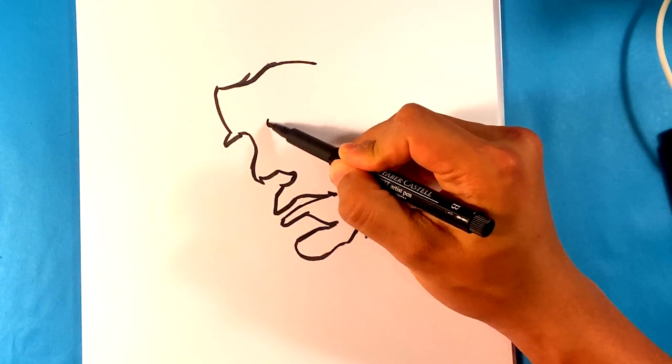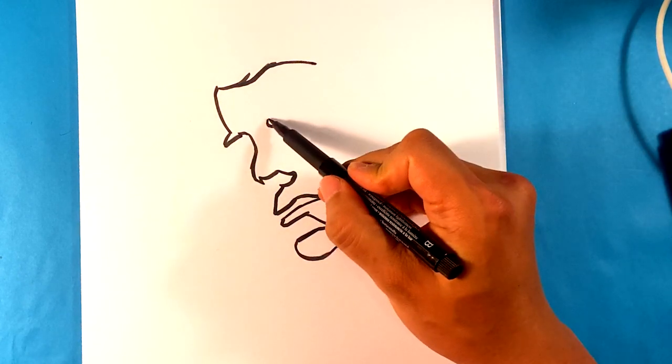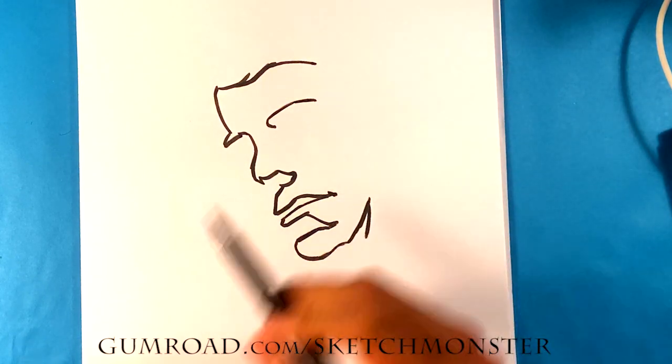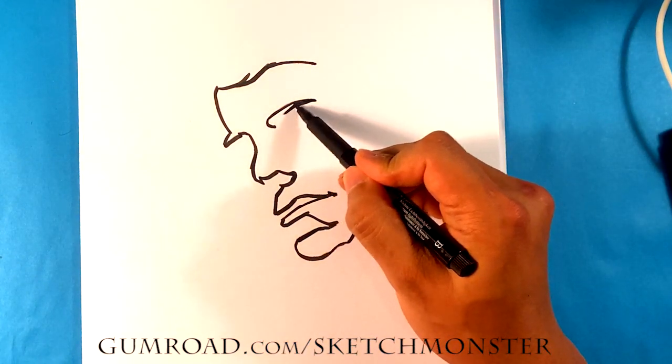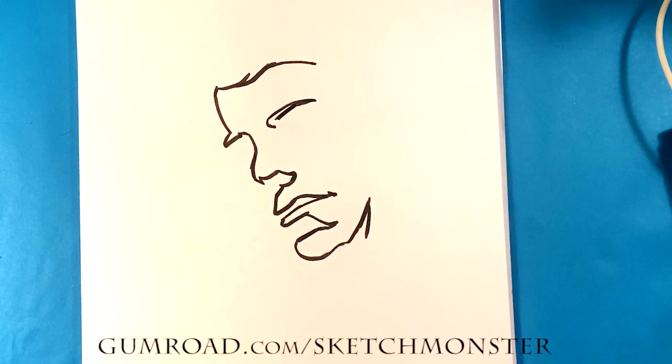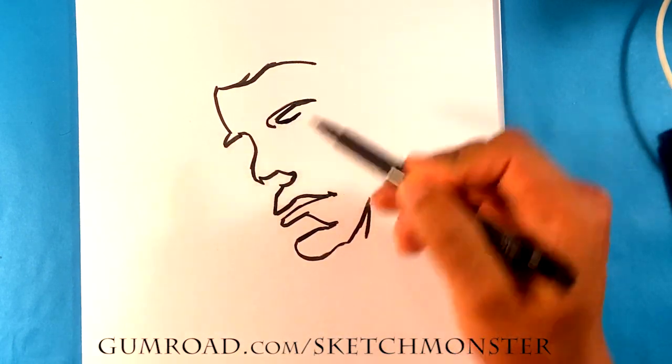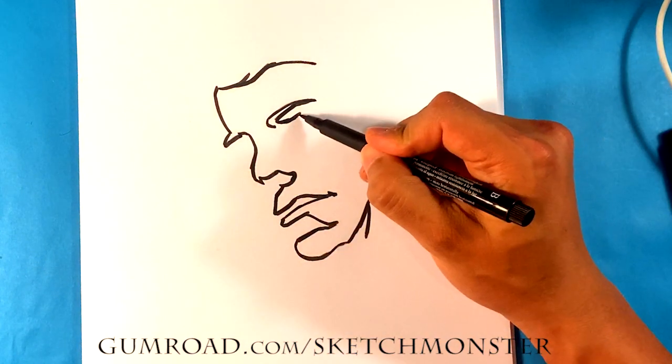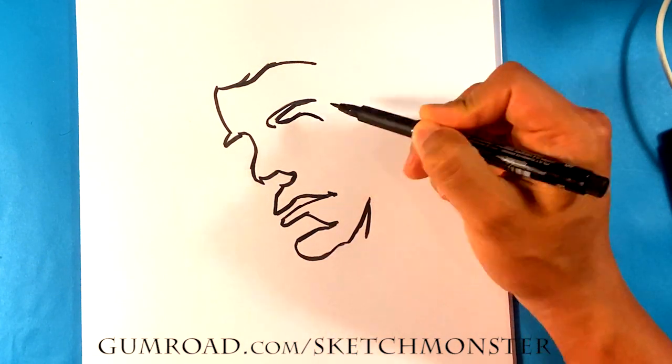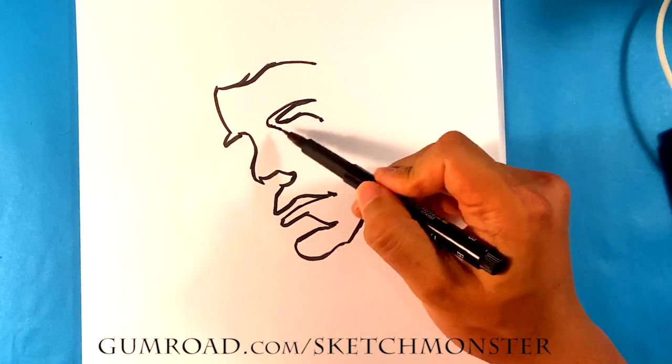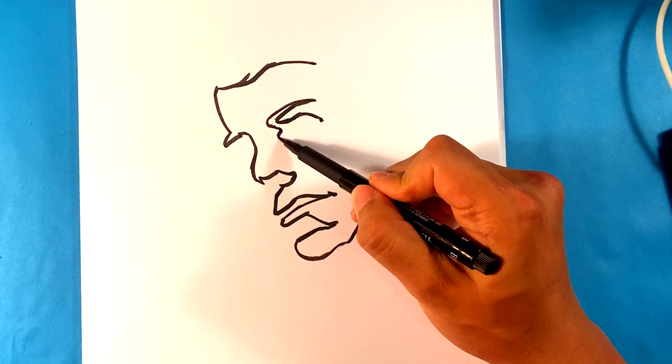So we're going to do the eyebrow. Top of the eyebrow. Pulling in. Top of the eye. Pulling down. Crack of that eye, the back, the far side.